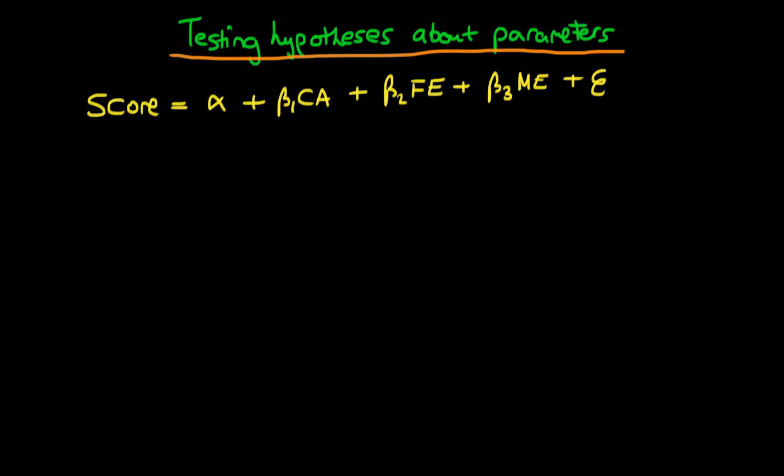Hi there, in this video we are continuing our discussion about how we test a hypothesis about a linear combination of parameters. Remember that we have this model here which relates the score which an individual got on a particular test to their class attendance, their father's education, and their mother's education.